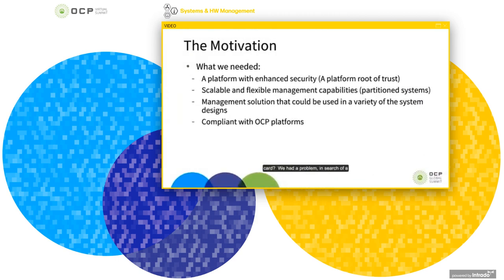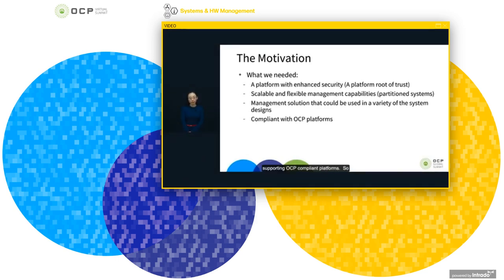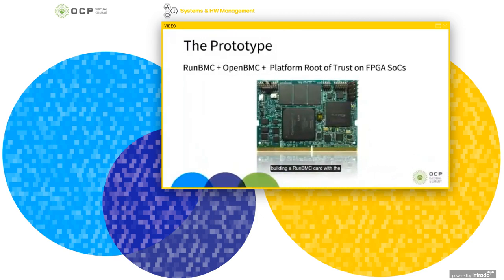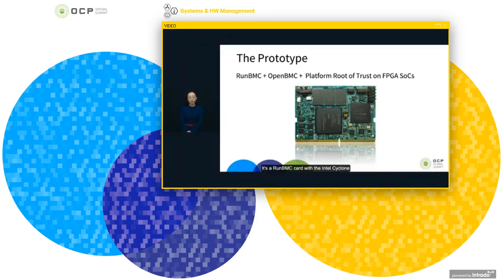So why did we make this card? We had a problem in search of a solution. We were designing a comprehensive data center solution and needed better platform-level security, a more scalable management engine, and a management solution that could be used in a variety of platforms such as a typical compute server or a headless FPGA server, and supporting OCP compliant platforms. Building a RUN BMC card with an Intel SoC FPGA running OpenBMC firmware and incorporating security architecture that supports a platform root of trust looked like a very good idea. This is our prototype card — a RUN BMC card with the Intel Cyclone 5 SoC and Intel Max 10 FPGA.